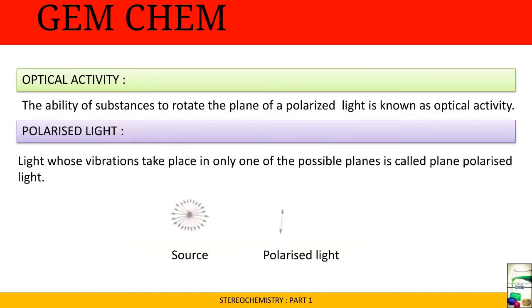Now we will see optical activity. One of the most important properties of a stereoisomer is optical activity. The ability of the substance to rotate the plane of polarized light is known as optical activity. Stereoisomers are related to particular physical properties, of which one is optical activity.